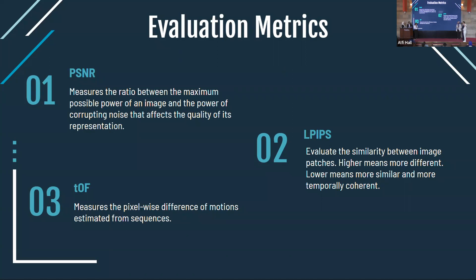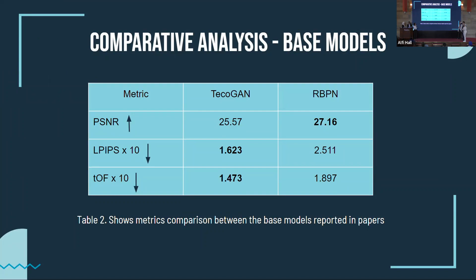LPIPS evaluates the similarity between image patches and is closer to the subjective evaluation of human eyes, making it more accurate than PSNR alone. Higher LPIPS means more different, while lower means more similar. Finally, TOF measures the pixel-wise difference of motion from estimated sequences of frames. Comparing results from the base models presented in the original papers, PSNR is higher for RBPN due to its highly structured architecture, while LPIPS and TOF results are better for TQGAN as it is more visually appealing.